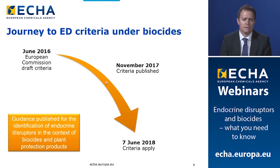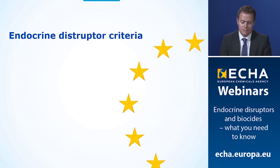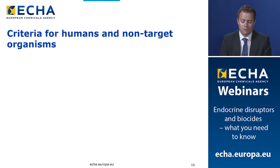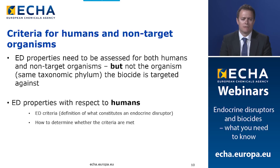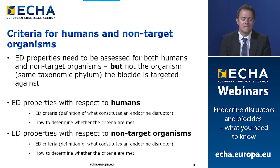Regarding the endocrine disruptor criteria, the criteria applies to both humans and non-target organisms. ED properties must be assessed for both human health and non-target organisms, but not necessarily for organisms the biocide is targeted against — that applies mainly to biocides where the mode of action is through the endocrine system. Section A covers ED properties for humans, defining what constitutes an endocrine disruptor and how to determine if the criteria are met. Section B covers the same for non-target organisms.